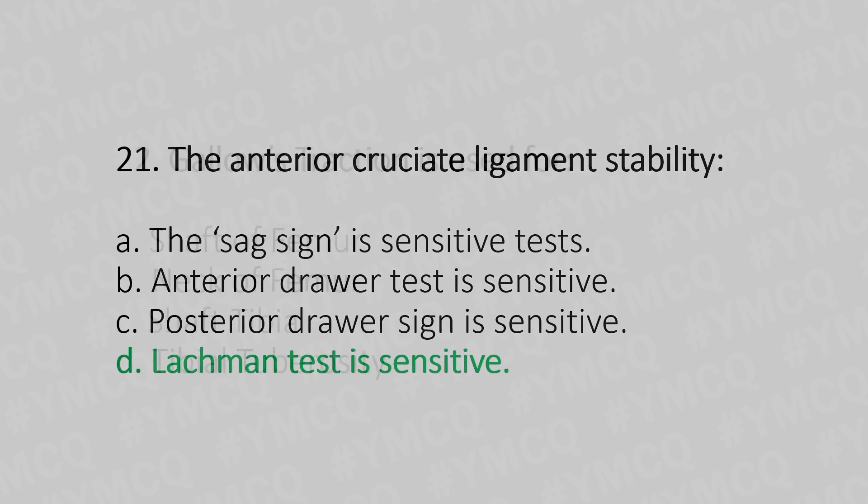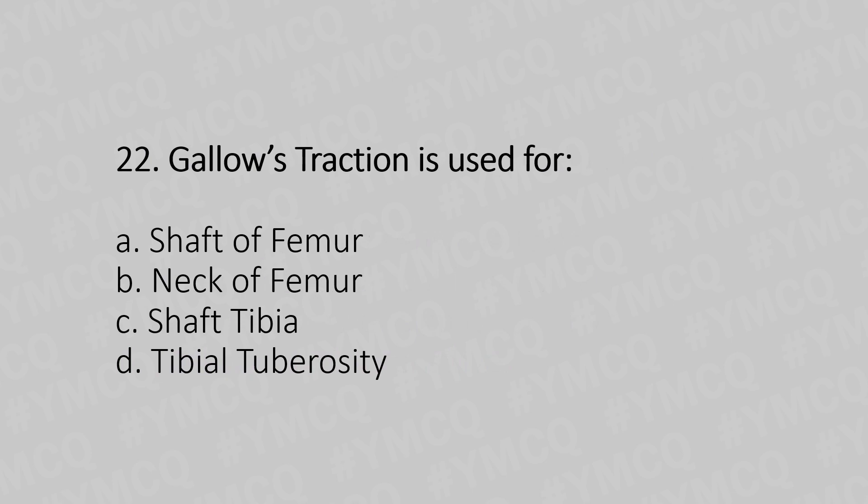Now let's move to question number 22. Gallows traction is used for: Option A, shaft of the femur. Option B, neck of the femur. Option C, shaft of tibia. Option D, tibial tuberosity. And the answer is Option A, shaft of the femur.